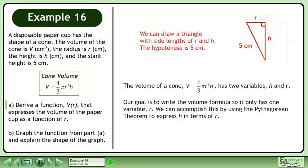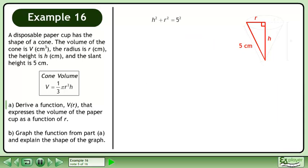We can draw a triangle with side lengths of r and h. The hypotenuse is 5 centimeters.